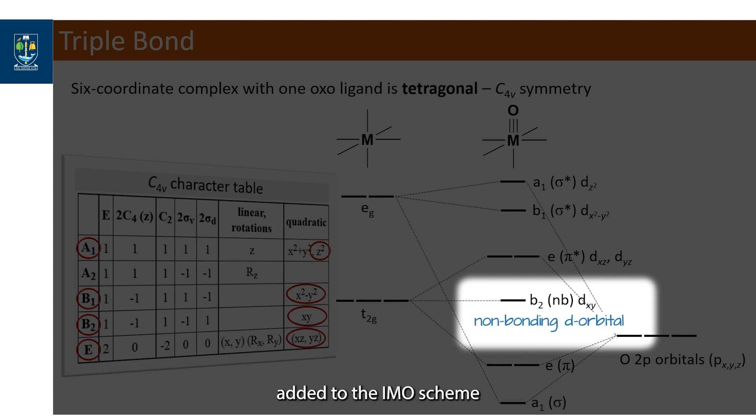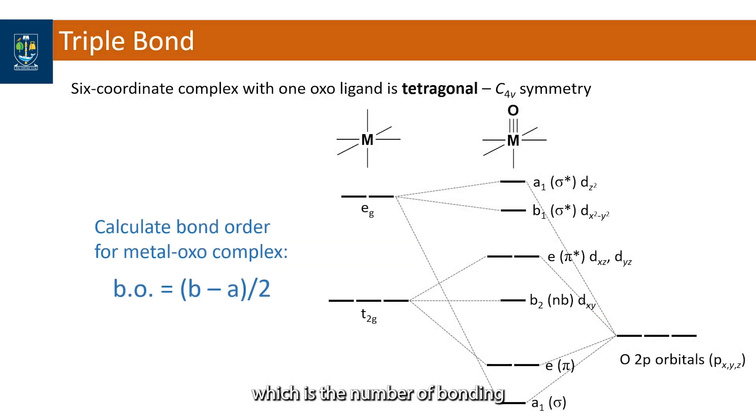Electrons are added to the MO scheme in order to determine the bond order which is the number of bonding electrons minus the number of antibonding electrons divided by two.